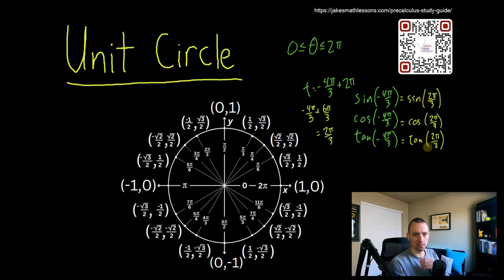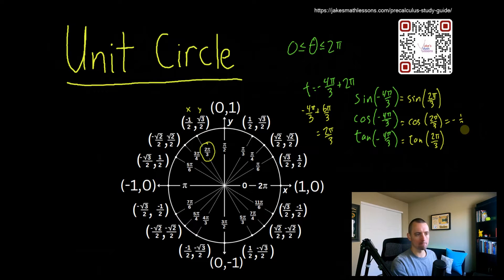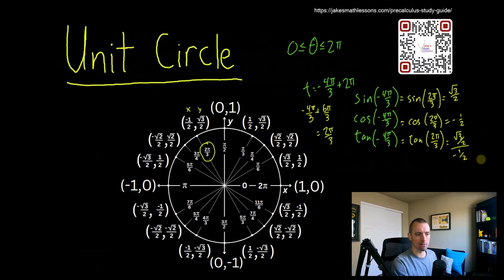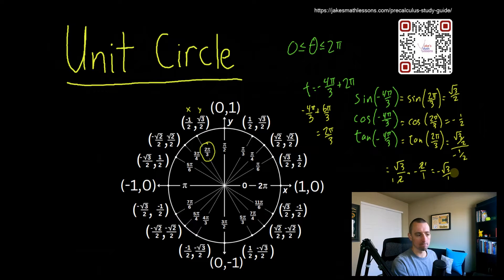Now, do you see two pi over three on the unit circle? Yes, it's right here. We can directly use our unit circle. The x-coordinate is negative one-half, so the cosine is negative one-half. The y-coordinate is √3/2, so the sine is √3/2. The tangent is sine over cosine: (√3/2) divided by (negative one-half). Multiplying by the reciprocal gives us (√3/2) times (negative 2/1). The twos cancel, giving us negative √3 over 1, which is just negative √3. So the cosine is negative one-half, the sine is √3/2, and the tangent is negative √3.